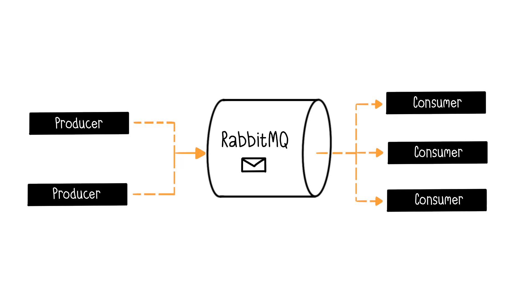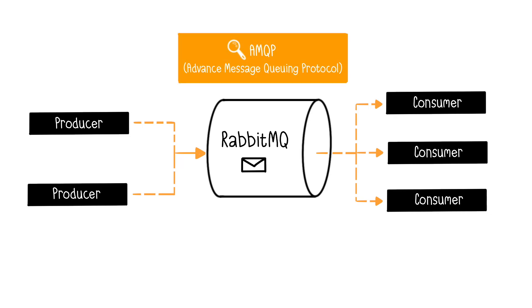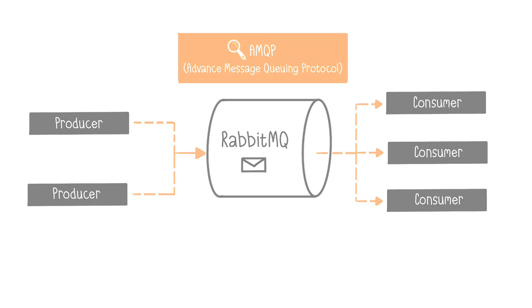It works with a producer that sends a message and a consumer that receives it. These messages can contain instructions or just be text messages. It's important to note that RabbitMQ is based on the AMQP, or Advanced Message Queuing Protocol, an open standard protocol that ensures message interoperability between different systems.